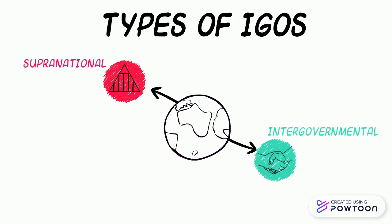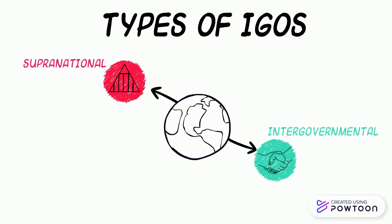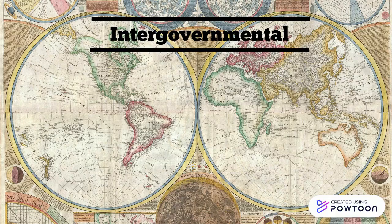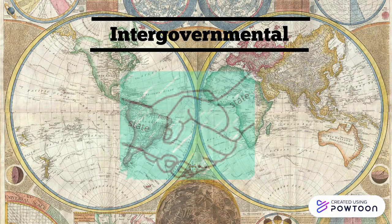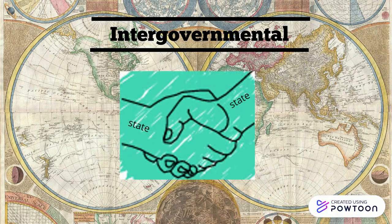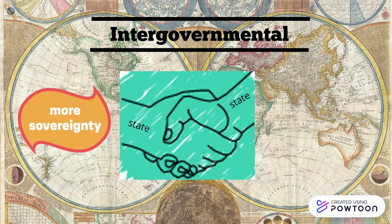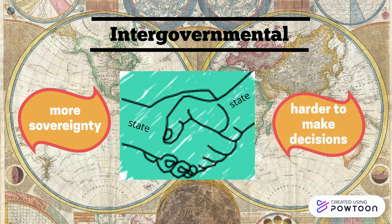There are two main types of IGOs: supranational and intergovernmental. Intergovernmental is the most common form, in which states work together as equals within the organization. This is preferable for states because they do not lose any sovereignty. But it also means that it can be harder to agree upon how to best govern issues that transcend states' borders.